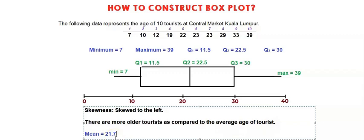Tourists with age older than 21.7 are more. If you look at the data here, the mean is 21.7, somewhere around here. We can see more older tourists as compared to the average age. That is what is meant by skewed to the left. If skewed to the right, it would be otherwise. That's all for how we construct and interpret a box plot. Thank you.